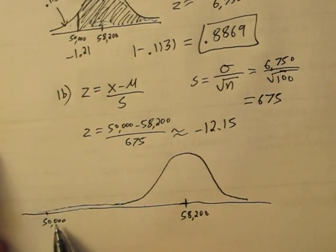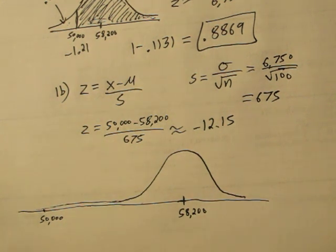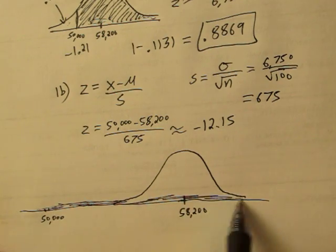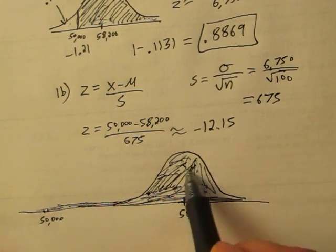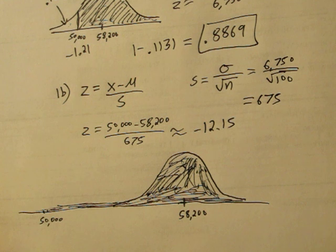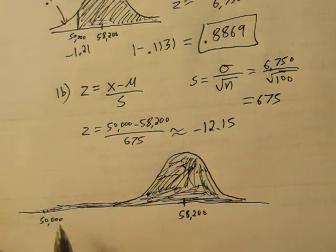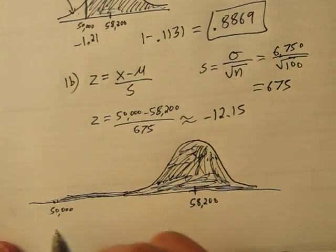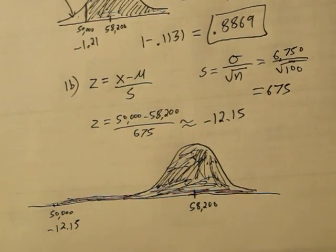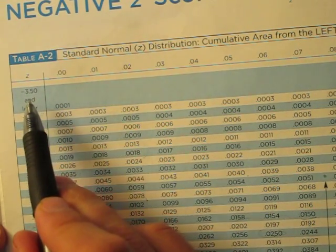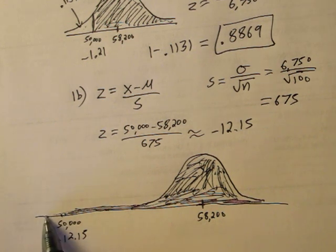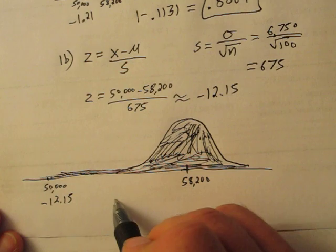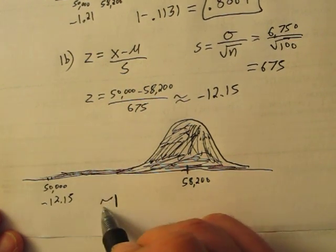What's the probability that the sample mean of 100 teachers is at least 50,000? In this problem, it's about 1, which means we're basically positive our sample mean will have a mean income of at least 50,000. When you try to look up that Z score of negative 12.15, the table's going to max out on you. It says anything lower than a 3.5 has almost no probability assigned to it, meaning the probability down here on the left side is essentially zero. So for 1b, our answer can be approximately 1.